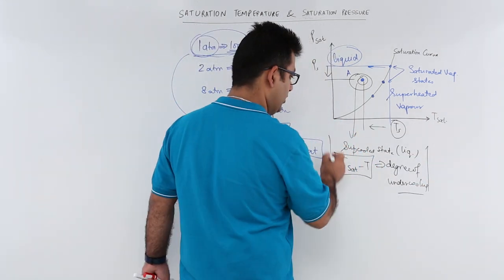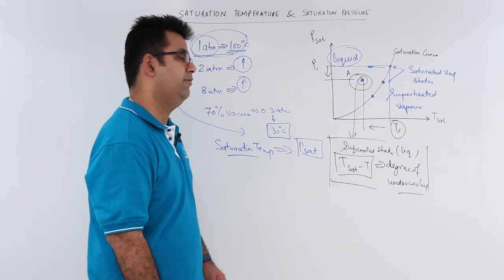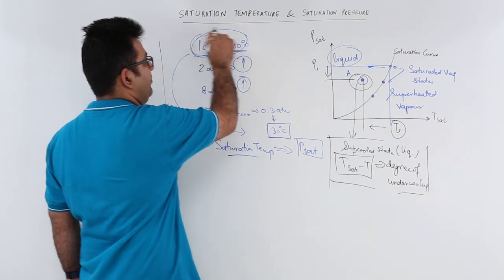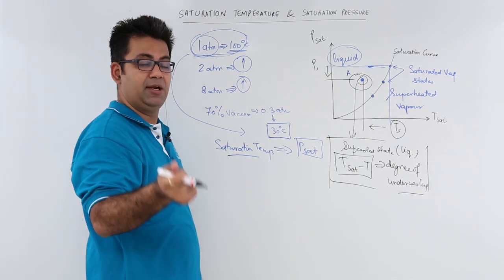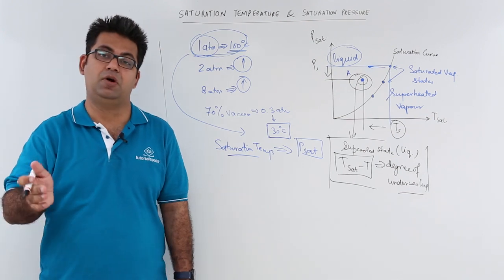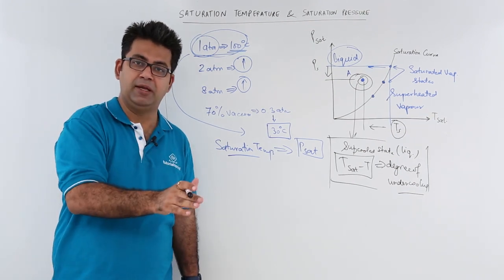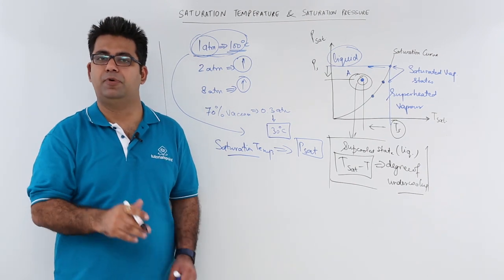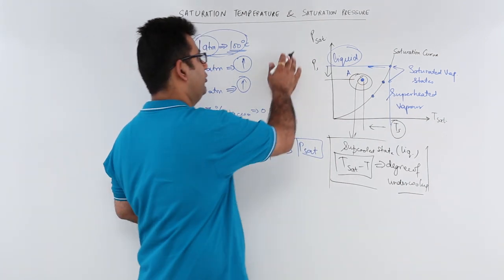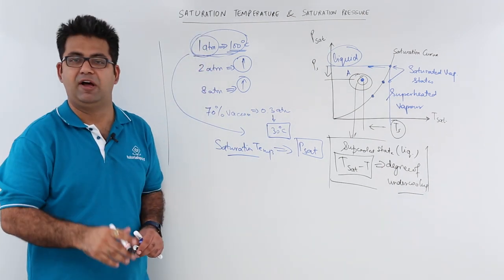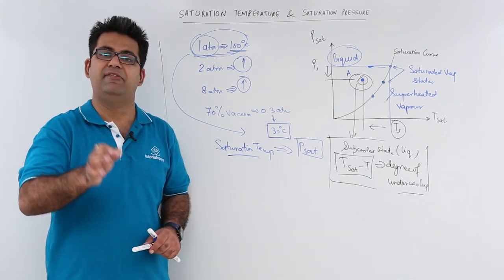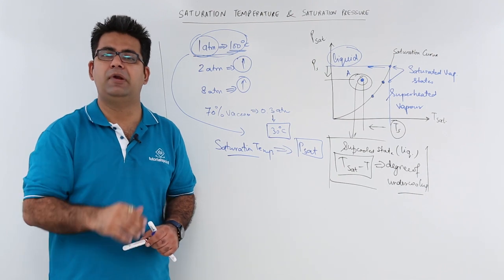So this is when you have your state which is below the saturation conditions. The temperature at which boiling or condensation takes place is called the saturation temperature, and corresponding to every saturation temperature you will have a corresponding saturation pressure. This graph shows you the variation of saturation pressure and saturation temperature. In the next video we will look at some property diagrams of pure substances, starting with the volume-temperature diagram.